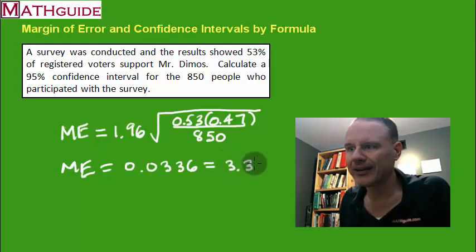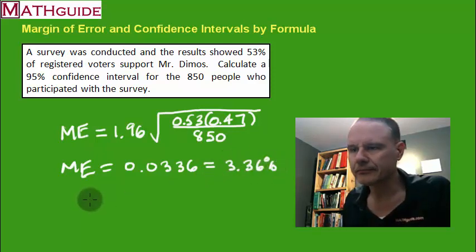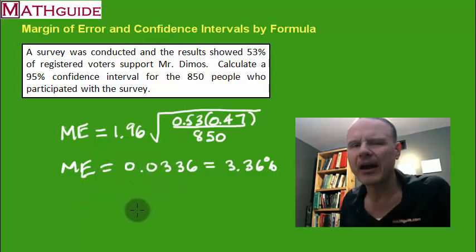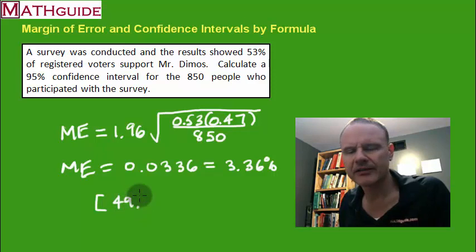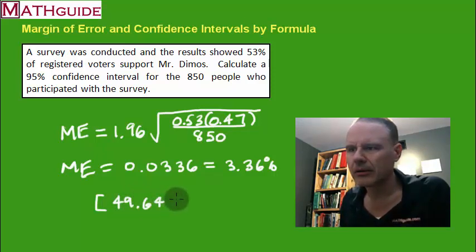Now that's the margin of error. If you remember anything about how to build your confidence interval from the margin of error, first you're going to take the 53 percent, or just the 53, minus 3.36. That's going to get the low end of your margin of error. I did that already and I'm getting 49.64, so that's the low end of the percent. And then what's the high end? You're going to take the 53 plus the 3.36 and you get 56.36 percent.